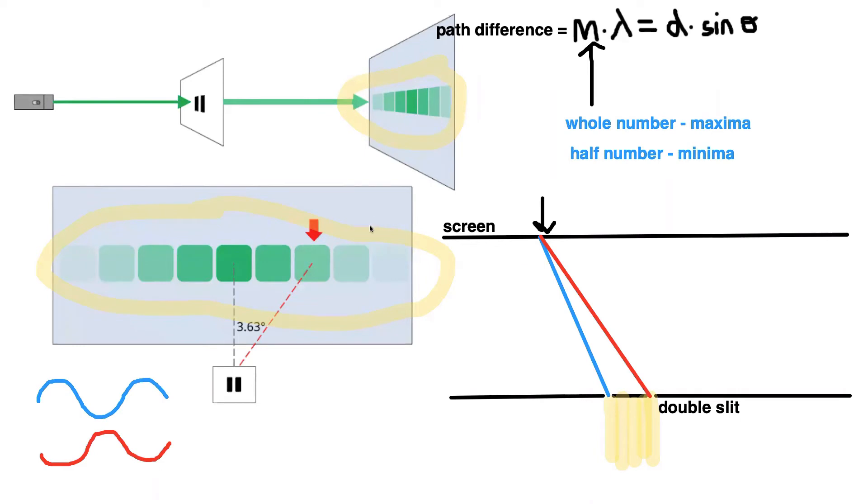So, for example, if we look at our diagram of the pattern over here, this would be our first order maxima. So the M would be one in order to find that. This here indicated would be our second order maxima. So the M would be two for that one. And so on. This would be our third order maxima.